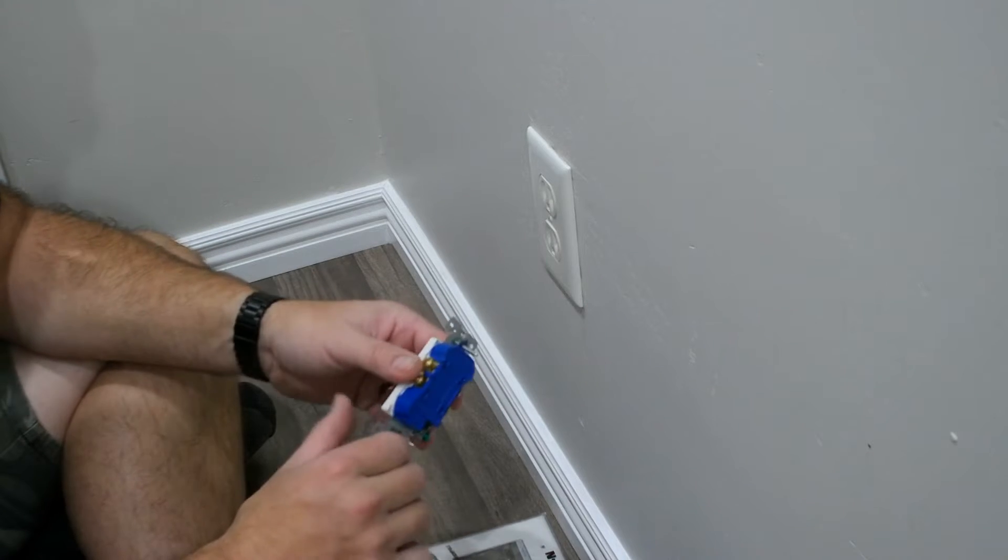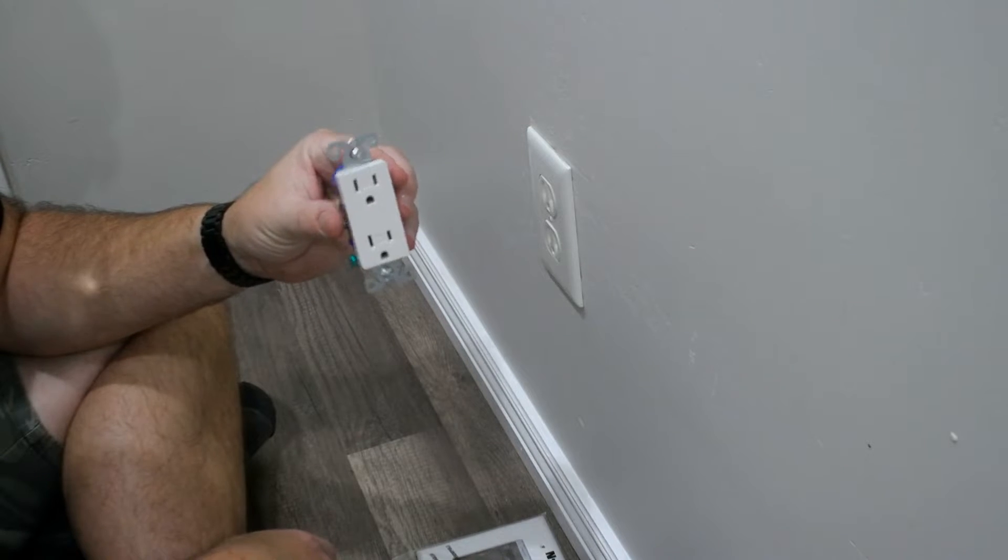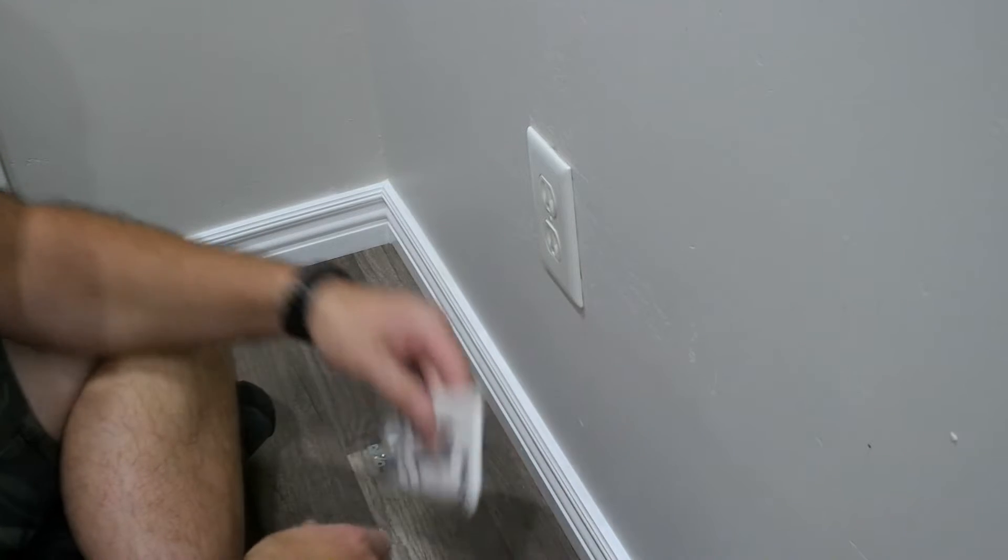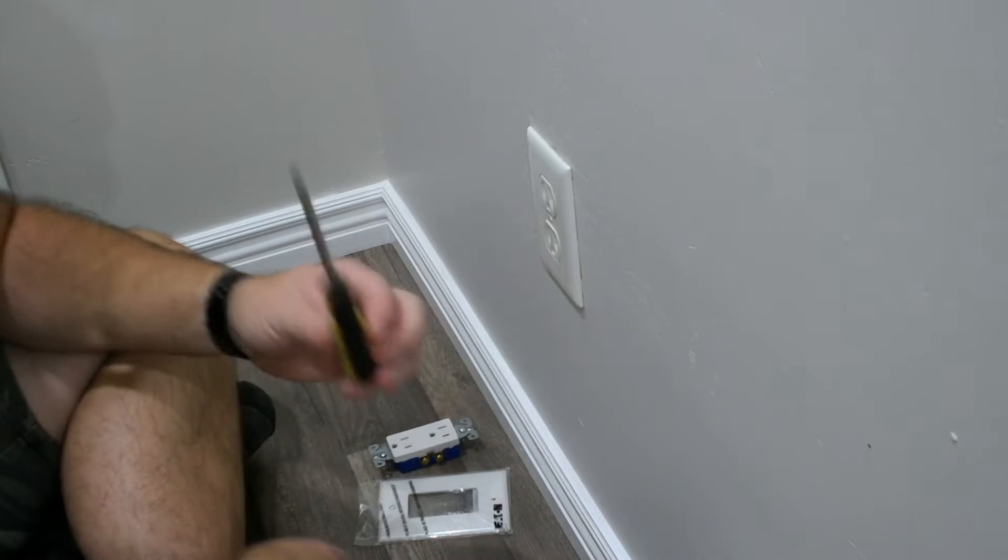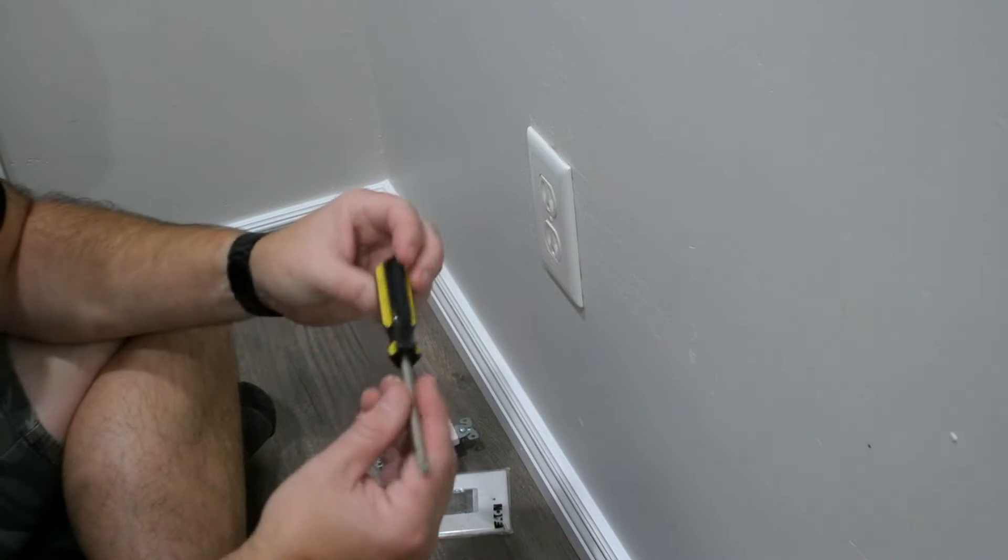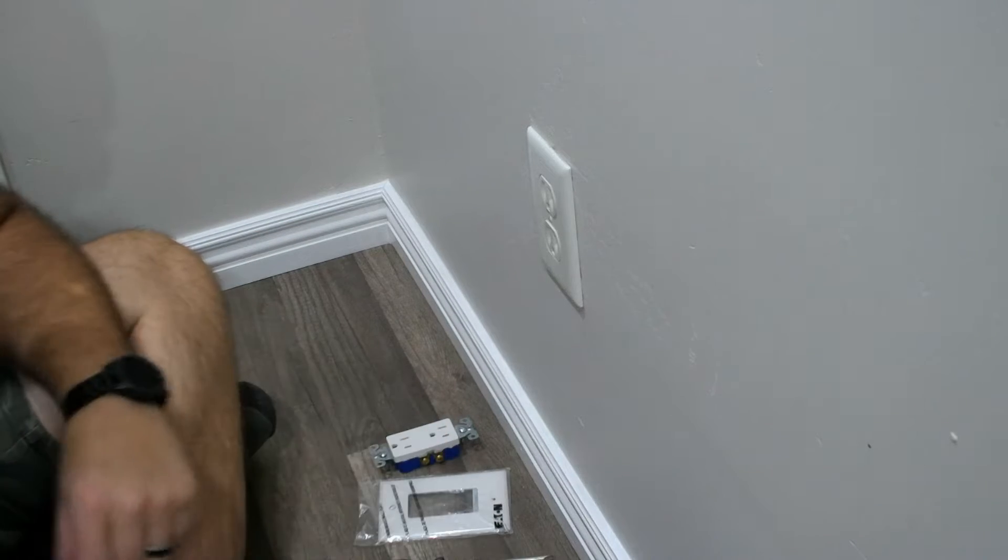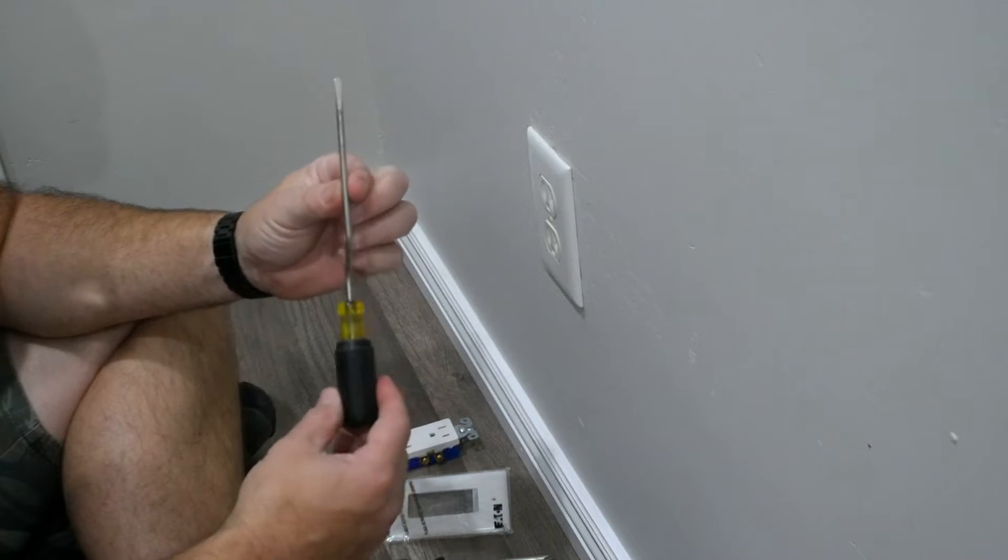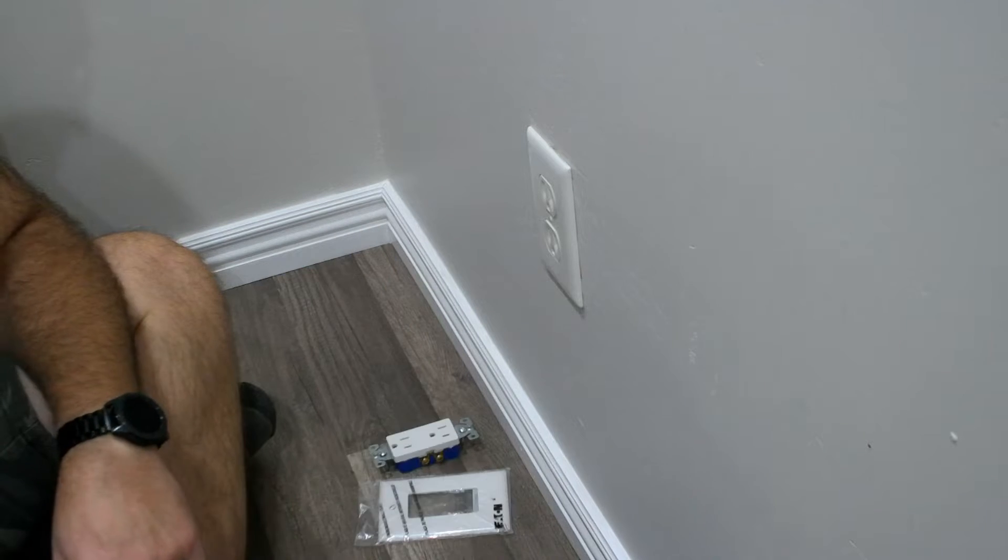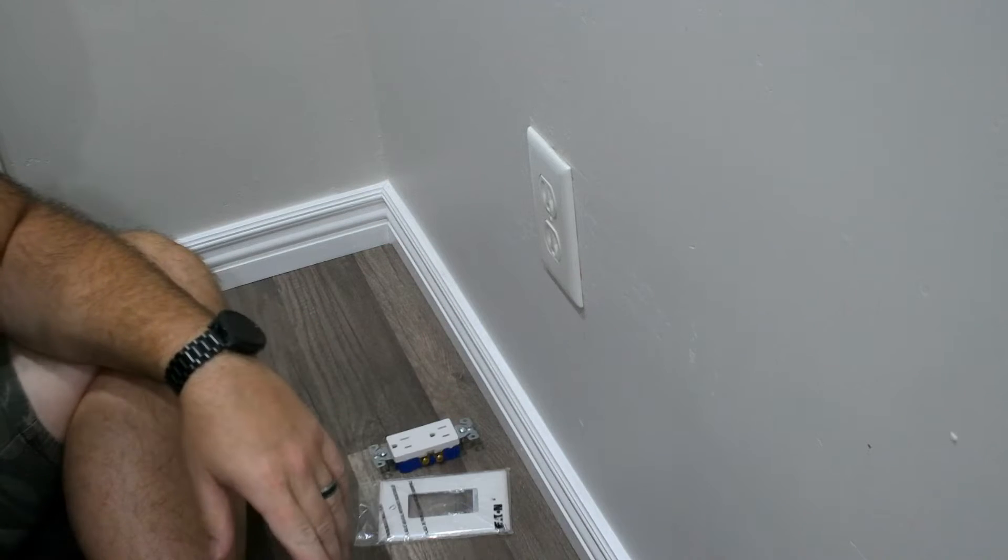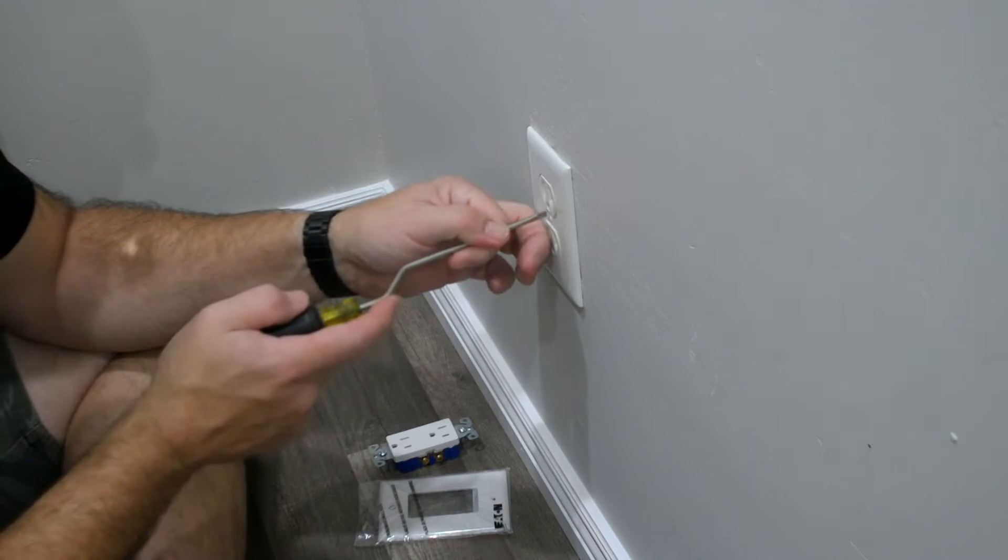Alright, so here we are at our receptacle. I've got my Decora receptacle, cover plate, a Phillips head screwdriver that's not really ready for electrical work but it was the first one I found, my Whirly or offset screwdriver, a pair of strippers, and a cordless drill. This should be all that we need to take care of this task. Let's get right to it.